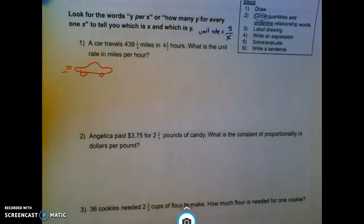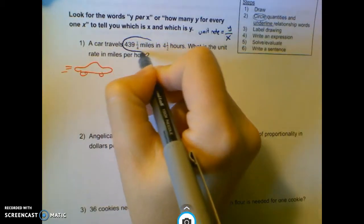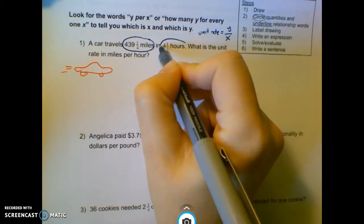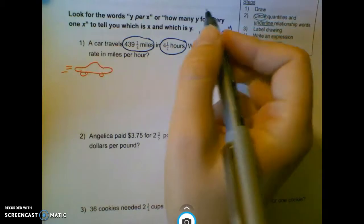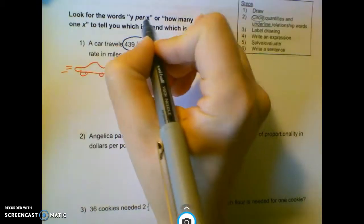Now I'm going to circle my quantities. So 439.25 miles, 4.5 hours with their units. I'm going to underline relationship words. The most important relationship word that is new in this lesson is this word per or similarly for every one.